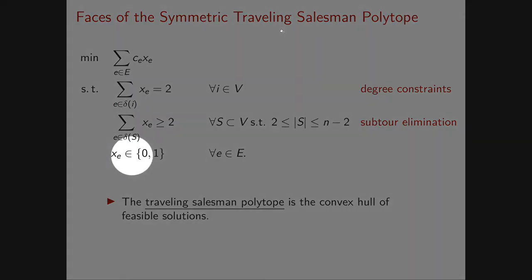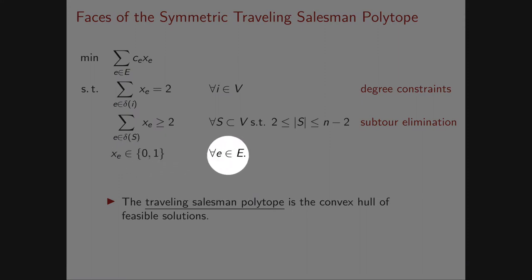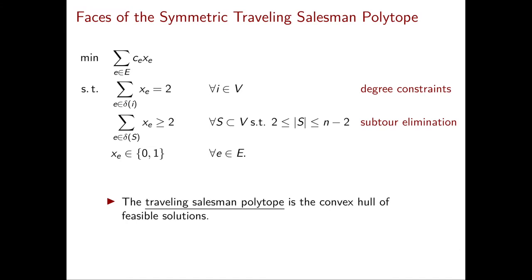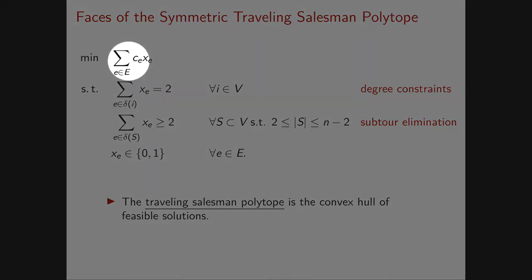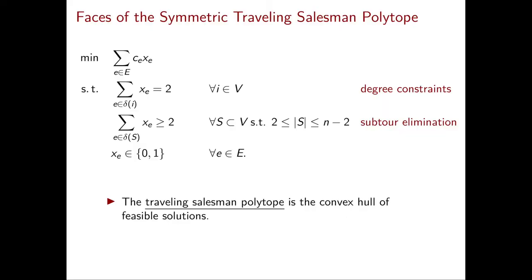We have binary variables x_e associated with the edges of the graph, and the variable x_e will be equal to 1 whenever the edge e is part of the optimal Hamiltonian cycle. In our objective function we minimize the total length of the Hamiltonian cycle, and then our constraints are the degree constraints: for every node, exactly two edges in the Hamiltonian cycle are adjacent to this node.